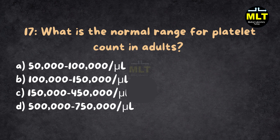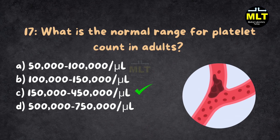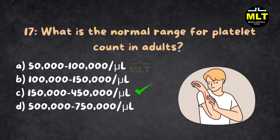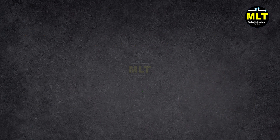Correct answer: C. 150,000–450,000 per microliter. Explanation: Normal platelet levels ensure proper clotting. A low count leads to bleeding risk, while a high count can indicate clotting disorders.